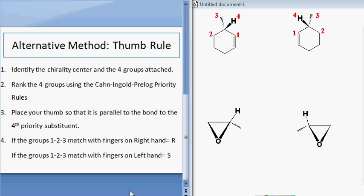In this second video, I'm going to show you an alternative method for assigning R and S notation to a chirality center. This is called the thumb rule.